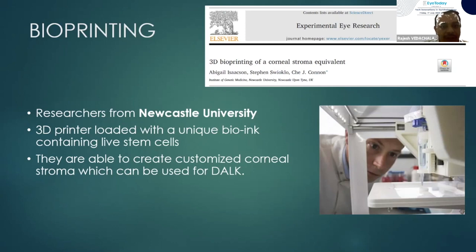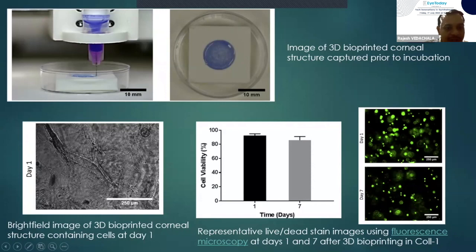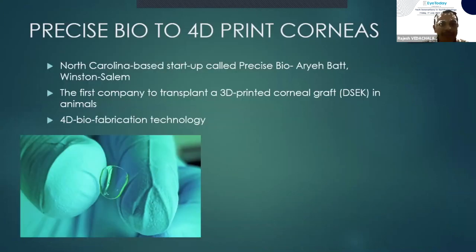Bioprinting is a new development. Newcastle University was the first to bioprint the cornea — they bioprinted only the stroma, which can be used for DALK surgeries. Here you can see the stained bioprinted cornea in blue, showing the collagen fibers at day 1. Cell survivability in the bioprinted cornea was assessed and at day 7, nearly 80 to 90% of the cells had survived. Precise Biome has come out with a 4D printed cornea, printing not only the stroma but also the endothelial cells for use in DMEK surgeries.